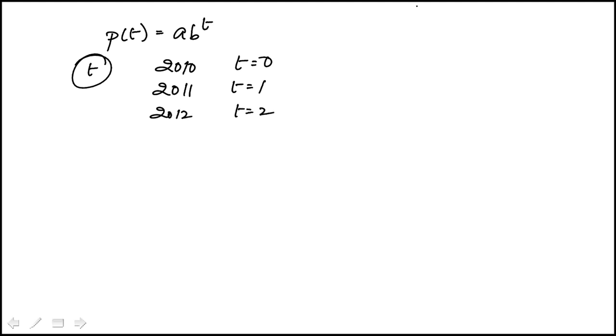They tell us that the population in 2010 is 425. That means p of 0, and these are all important steps that I'm doing, is equal to 425. b of 0 is 1, which means a is 425.